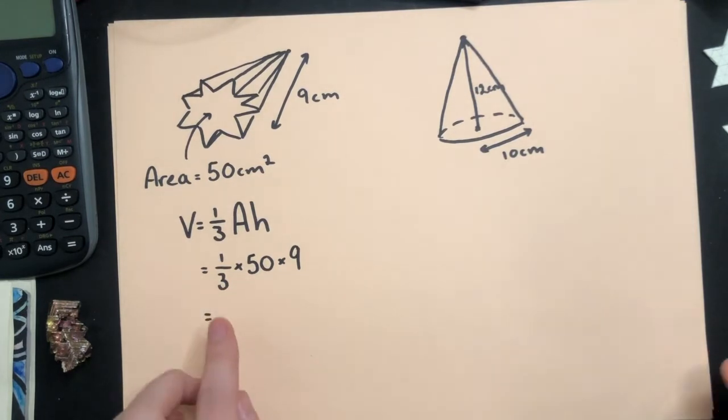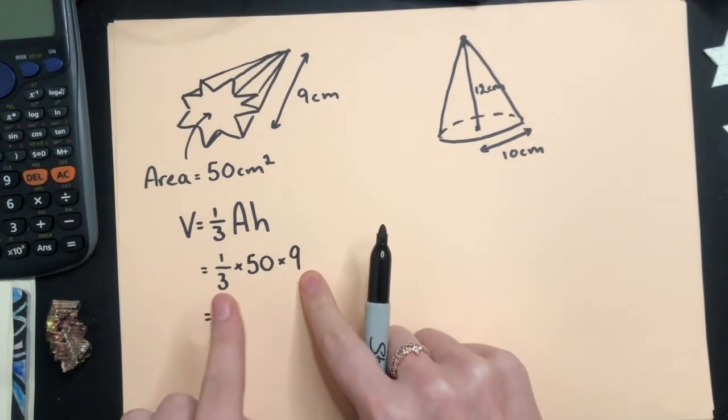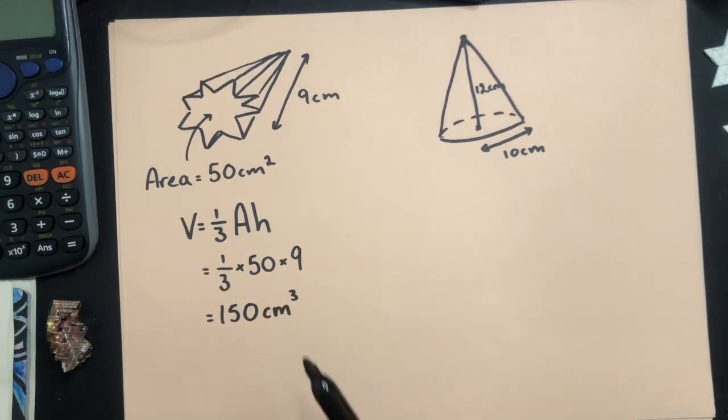So I'm going to do a third of 9, which is 3 times 50, 150. Remembering the unit, centimeters cubed, because this is a 3D shape.